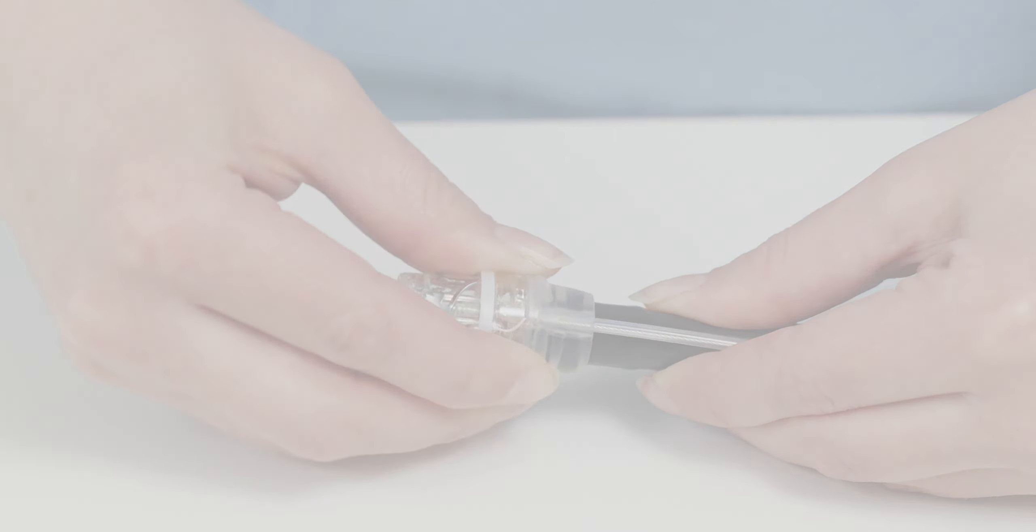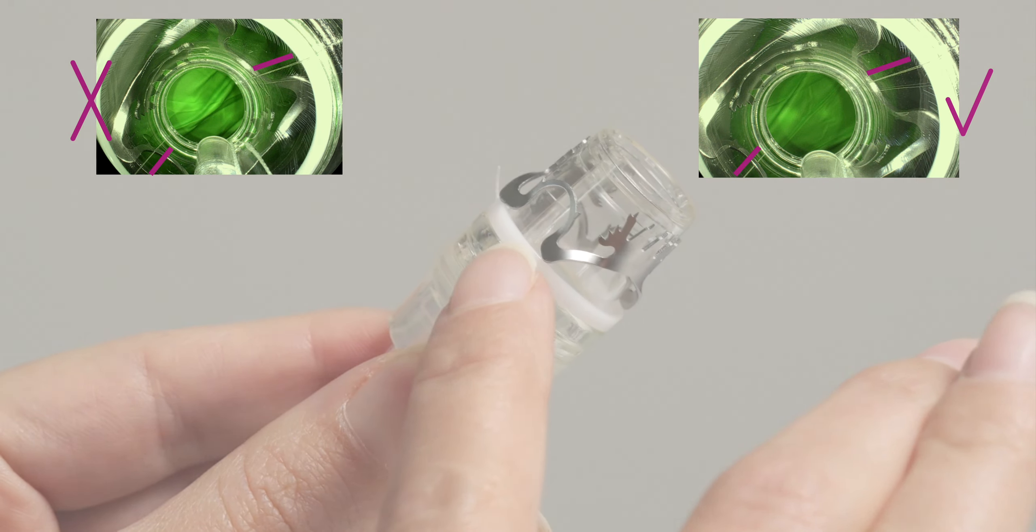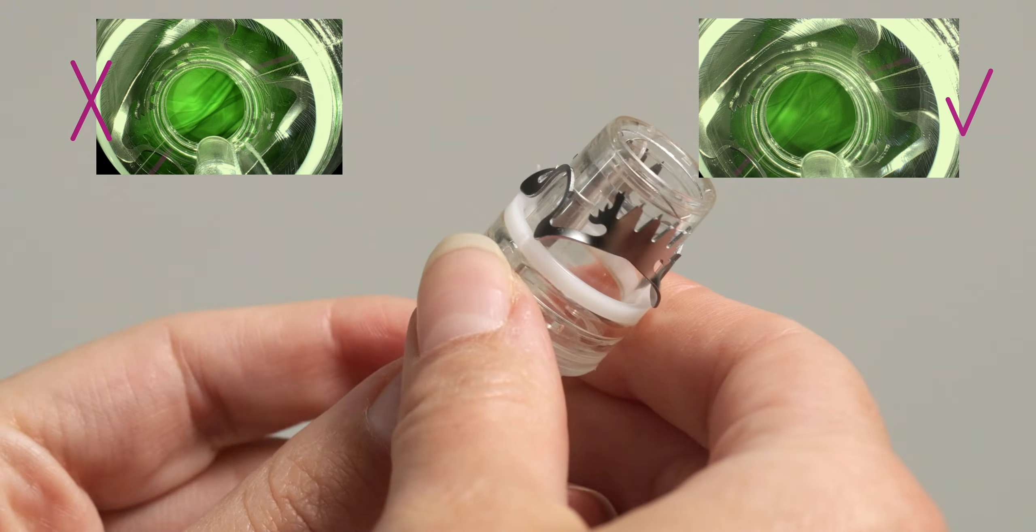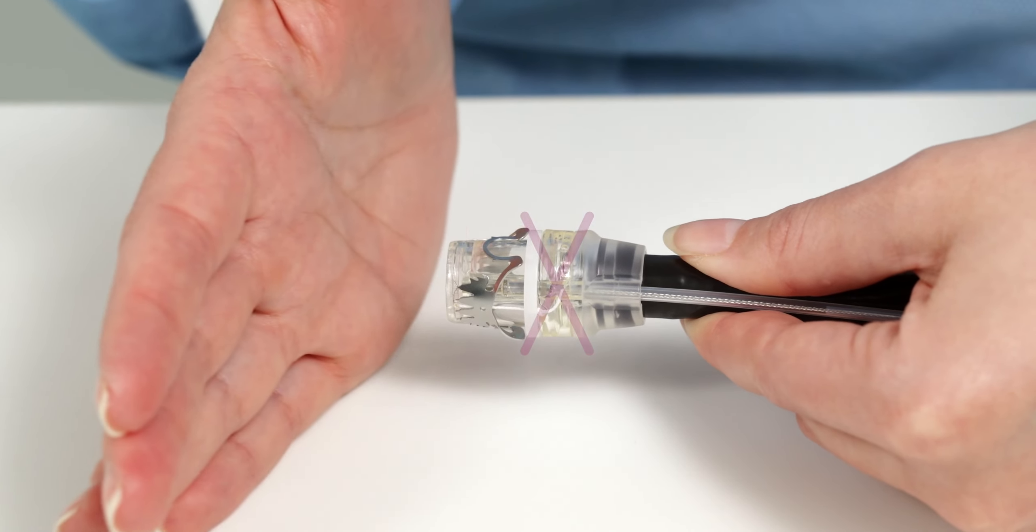During assembly, it must be ensured that the clip remains correctly positioned on the application cap. It must not be twisted or caught by the thread. The cap should not be pressed against the hand or table during assembly, as this could damage the cap.